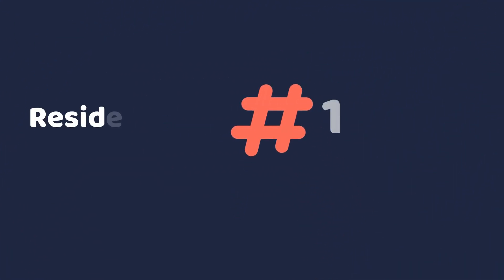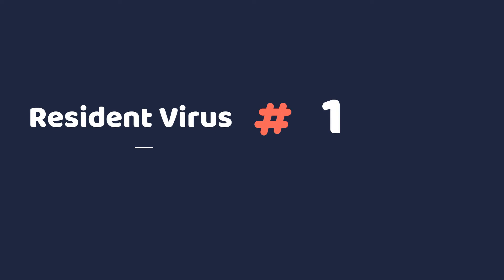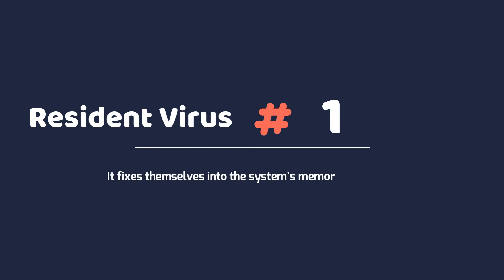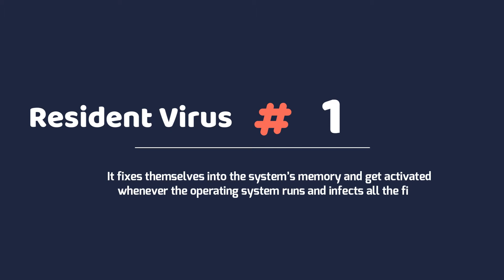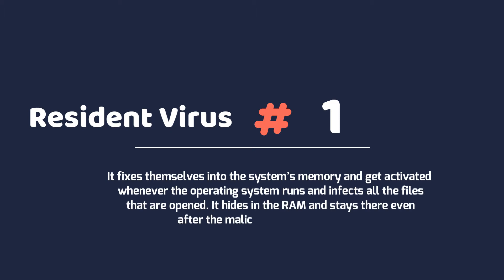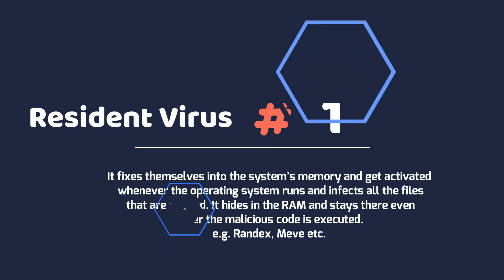1. Resident virus. It fixes itself into the system's memory and gets activated whenever the operating system runs, and infects all the files that are opened. It hides in the RAM and stays there even after the malicious code is executed. For example, Randex, CMJ, Meve, etc.